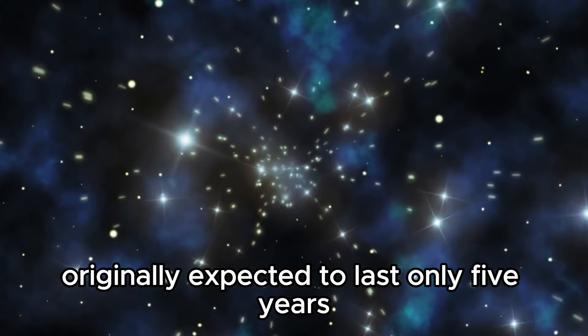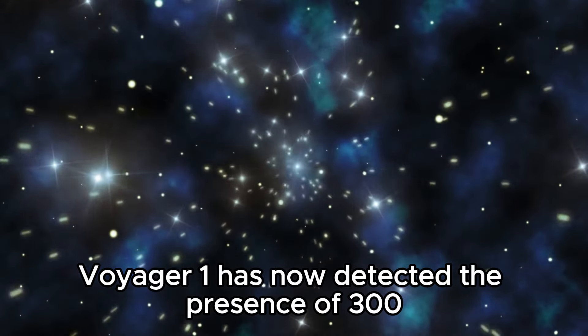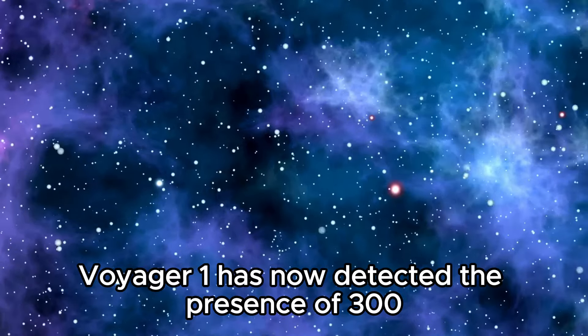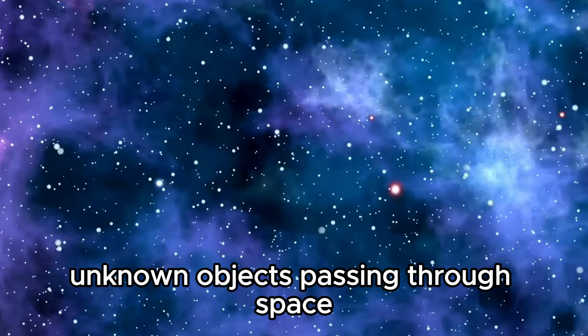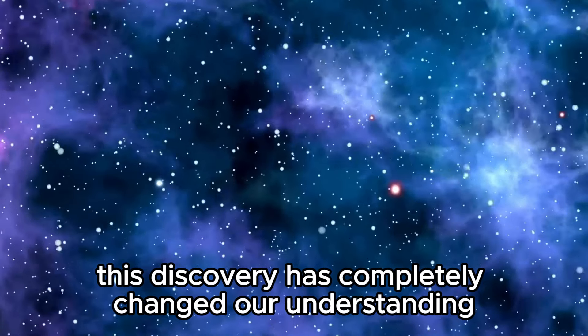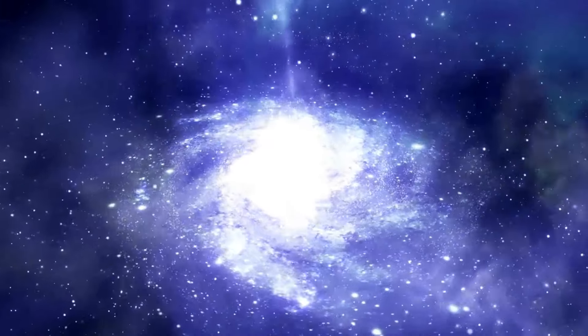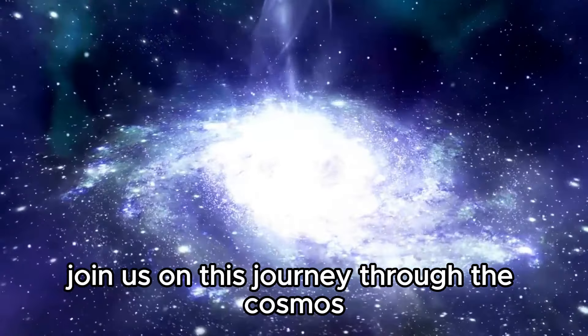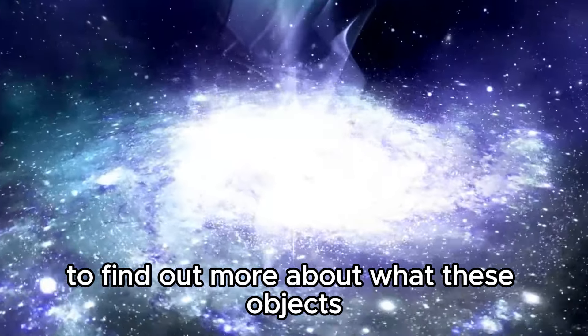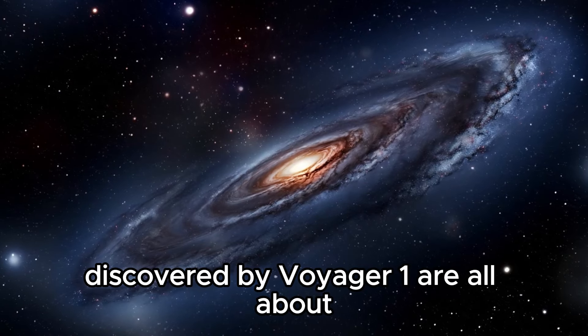Originally expected to last only five years, Voyager 1 has now detected the presence of 300 unknown objects passing through space. This discovery has completely changed our understanding, as these objects have been found to be plasmas from giant star explosions that occurred millions of years ago. Join us on this journey through the cosmos to find out more about what these objects discovered by Voyager 1 are all about.